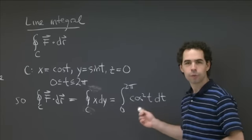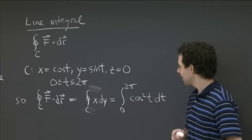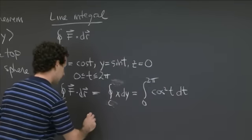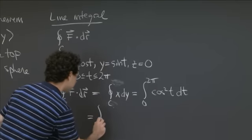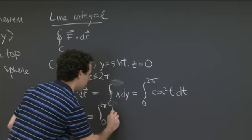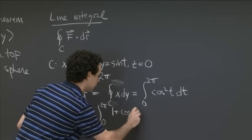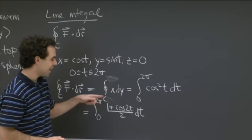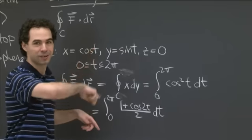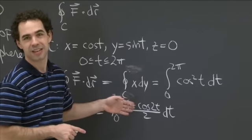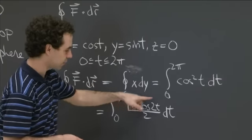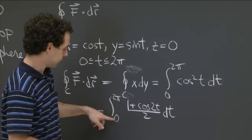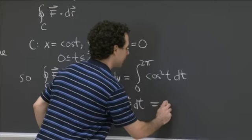Now we have to remember how to compute trig integrals. When we have cos² t, we use the half-angle formula. So cos² t = (1 + cos 2t)/2. The integral from 0 to 2π of cos 2t gives 0, since it completes two full periods and the positive and negative parts cancel. So we're left with 1/2 integrated from 0 to 2π, which gives 1/2 · 2π = π.